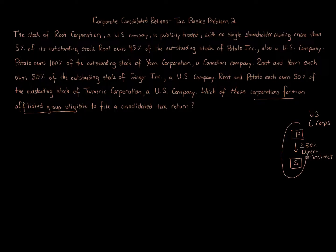The parent and subsidiary relationship allows you to file one consolidated return with the IRS. In a problem like this it can seem very challenging because there's a lot going on. Step one: remember the rules — you're going to have an affiliated group if you've got a parent-subsidiary relationship with 80% or more indirect or direct control, and it has to be a U.S. C corporation for all the entities you're considering.